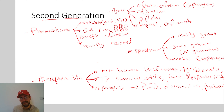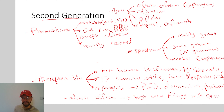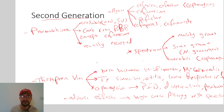Regarding the adverse effects of the second generation cephalosporins, they have high cross-allergy with penicillin, same as the first generation. If the patient has an allergy to penicillin, they most likely also have cross-allergy to the second generation cephalosporins.